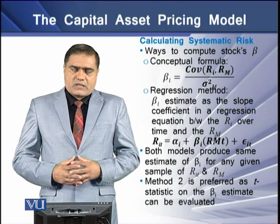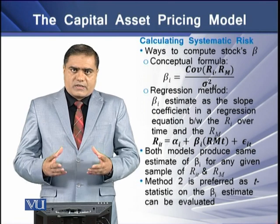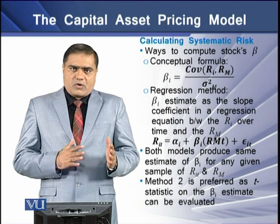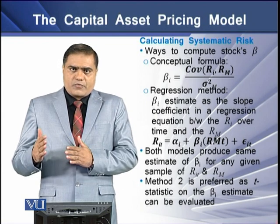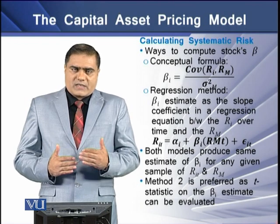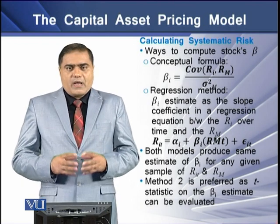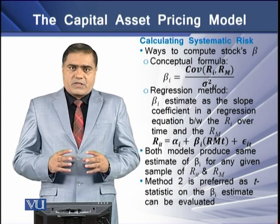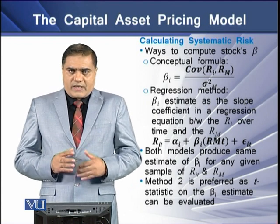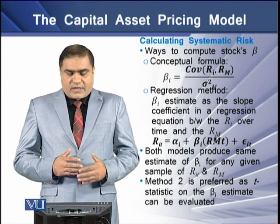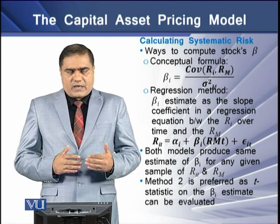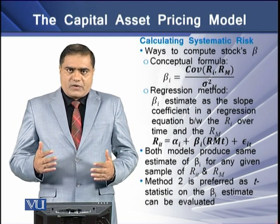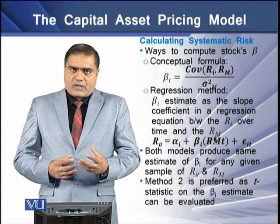There are two methods to calculate systematic risk. The first is the conceptual model, in which we divide the covariance of security I and the market portfolio by the market's variance or standard deviation squared. The second method is the regression model, in which we estimate beta by regressing the return on security I over time against the market returns to get the beta estimate.